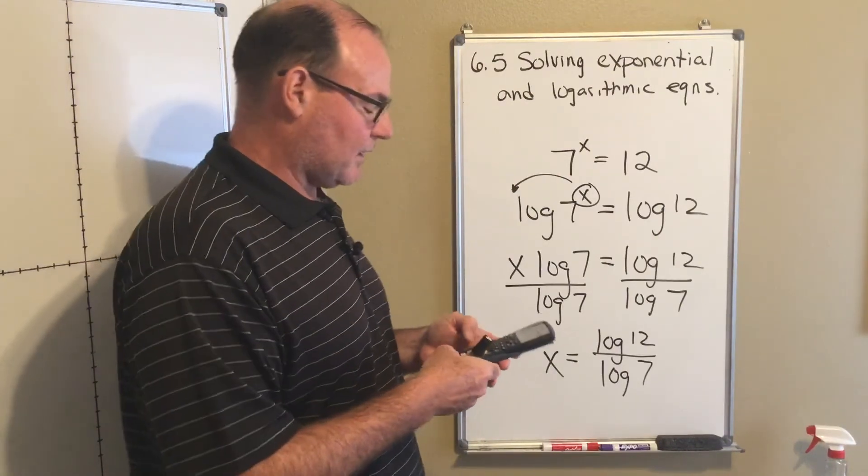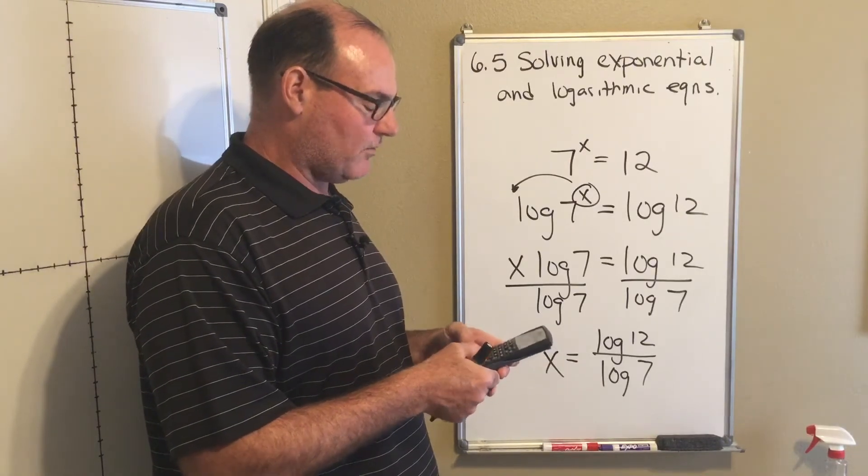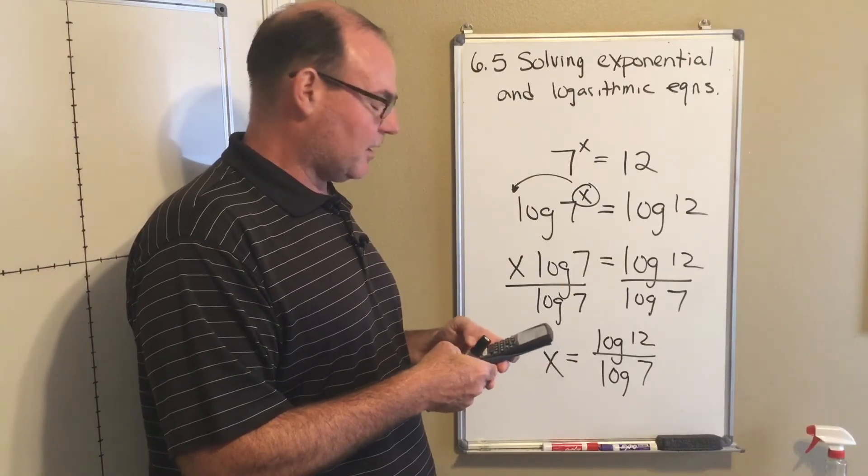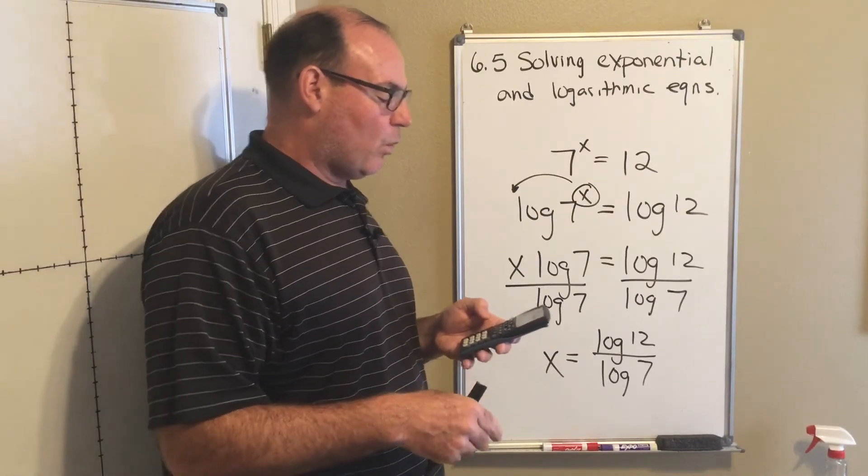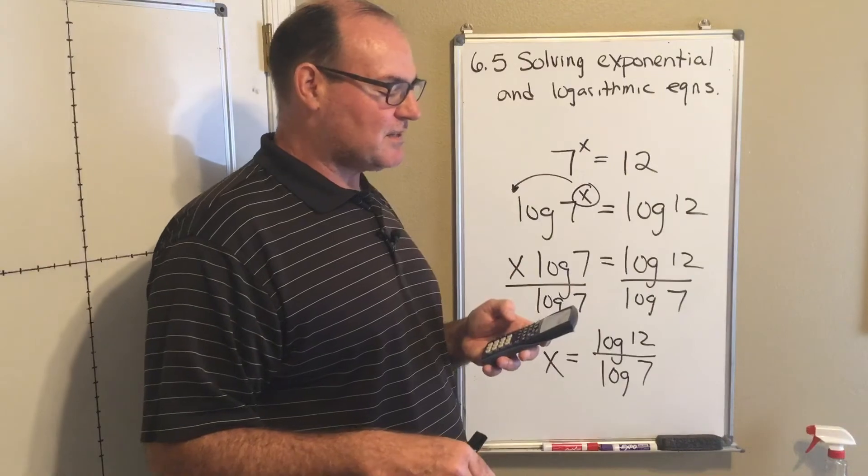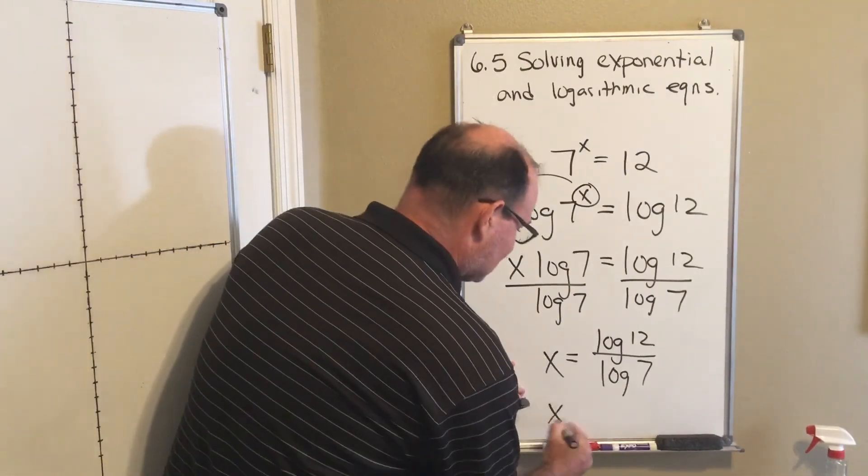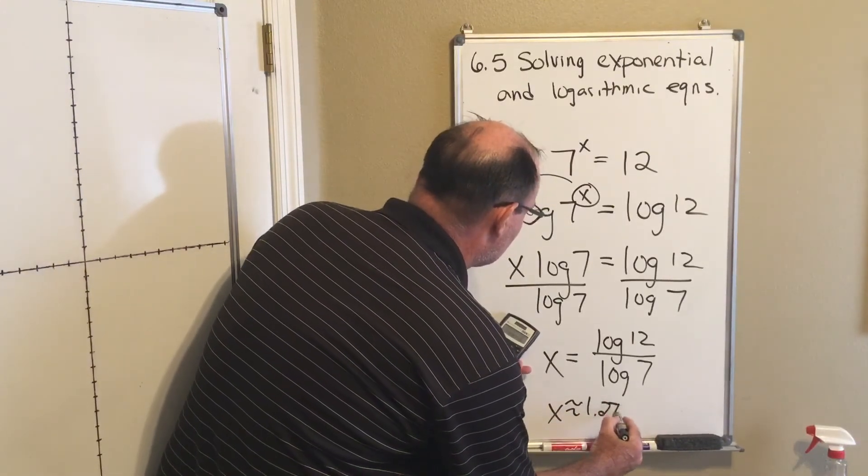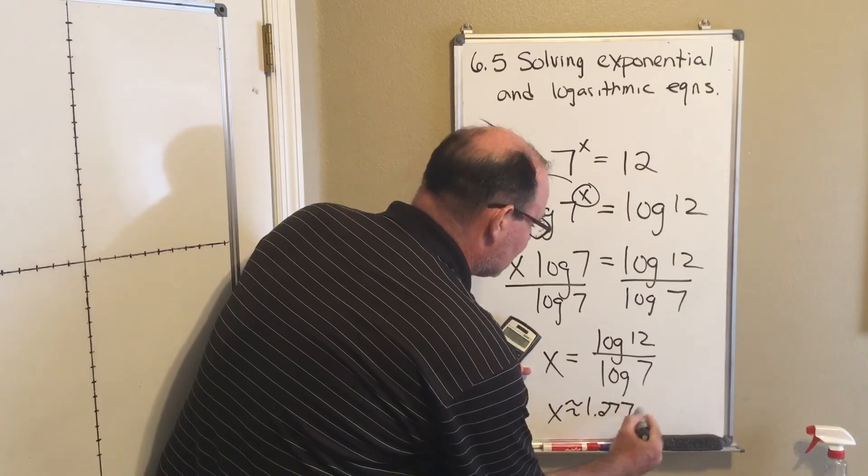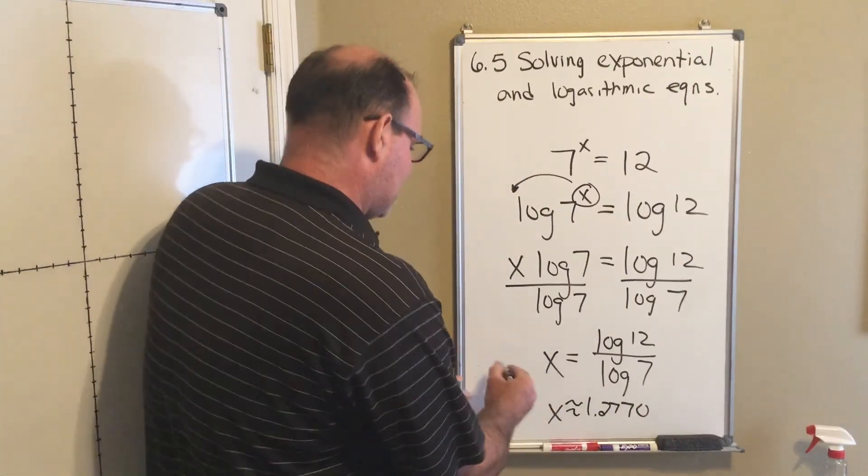...as soon as I get my calculator running. So I've got in the numerator, I've got the log of 12, then I'm going to divide by the log of 7 and it's going to turn out to be 1.276989408. I'm going to round that. So x is approximately equal to 1.2770 when I round to the fourth decimal place. And so I'll put that in a set.